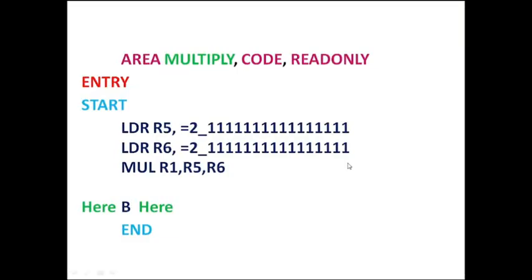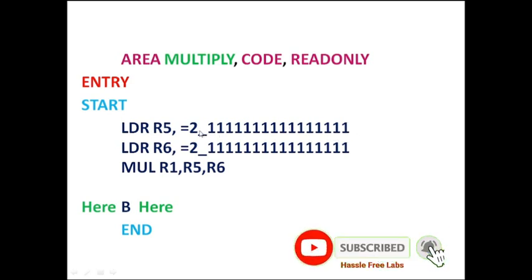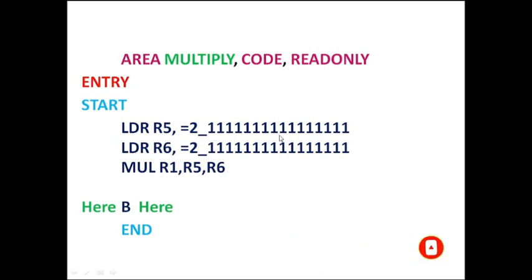So how to do this task? This is the way we can execute the multiplication of two 16-bit binary numbers. The instruction we have to use is LDR. Instead of the MOV instruction, we use LDR R5, = followed by the binary number in the format 0b2_ with the binary bits representing the target number. Here I am feeding in a 16-bit binary number, which if converted to hexadecimal is FFFF. Similarly, to the R6 register, I am loading the second 16-bit binary number, which is again FFFF. Next I am multiplying this and the result will be available in the R1 register.